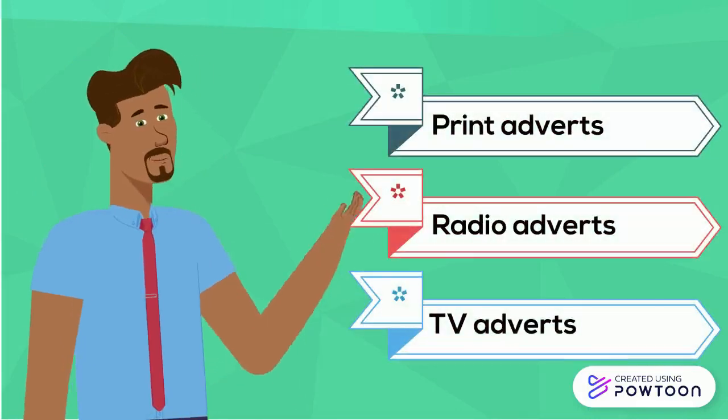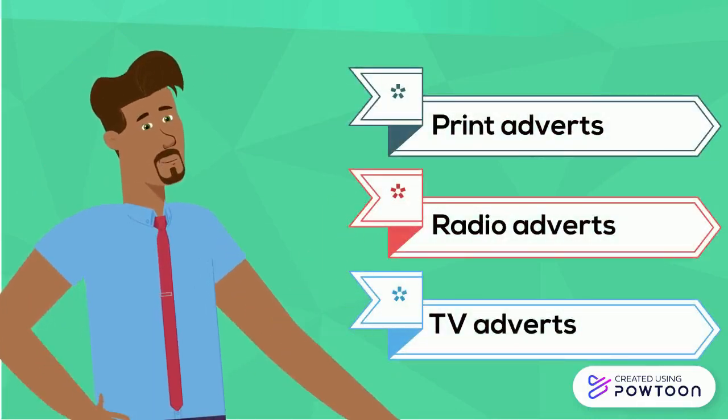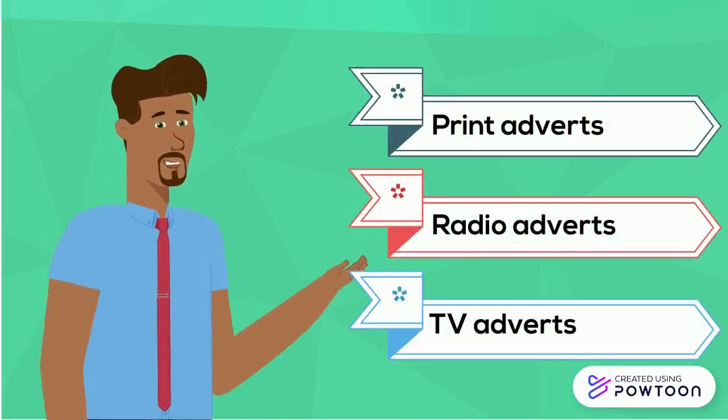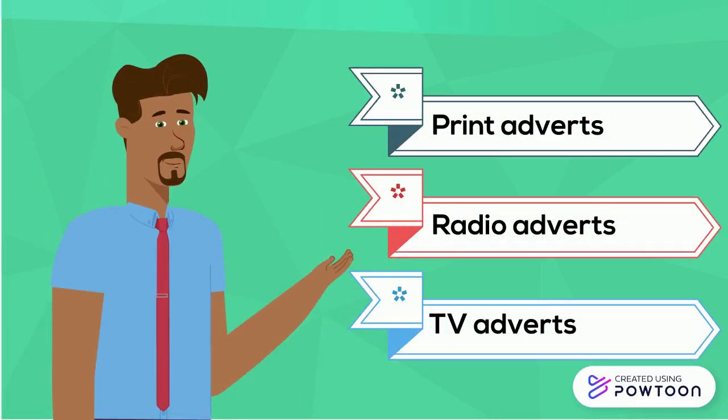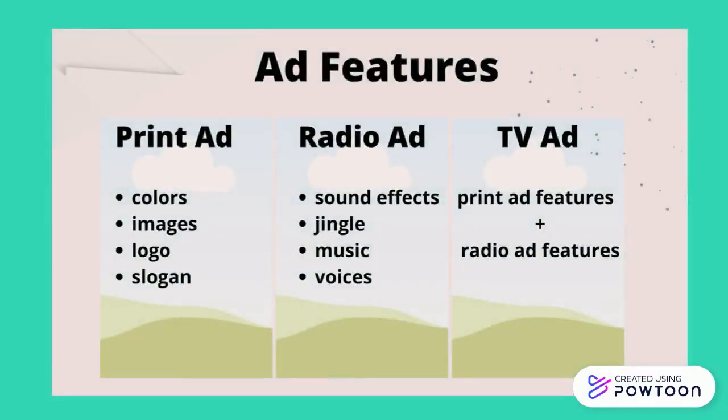There are different types of adverts: print ads, radio ads, and TV ads. Each type has its unique features. You can see these features on the screen.